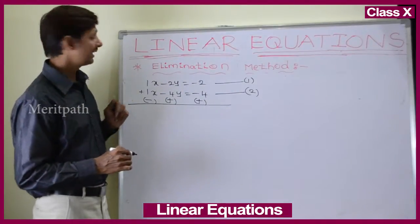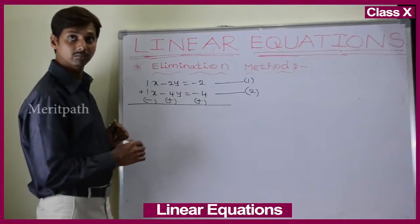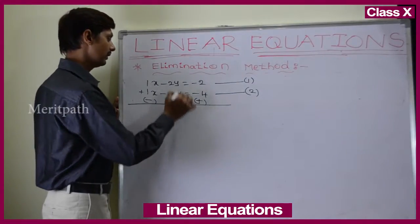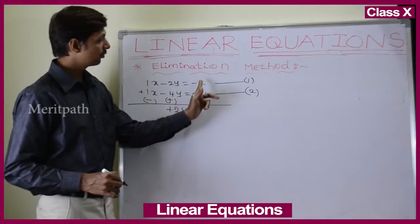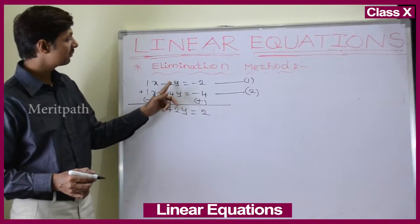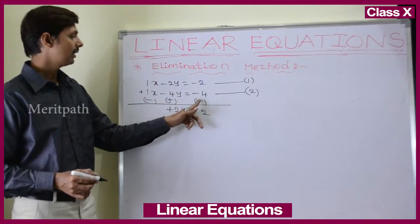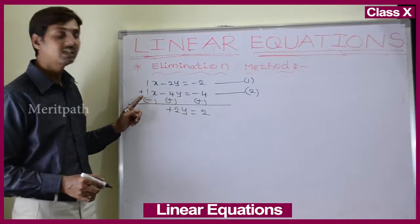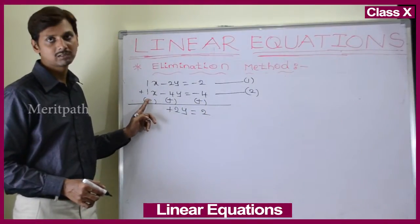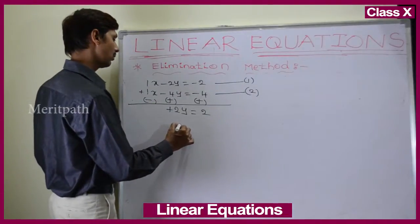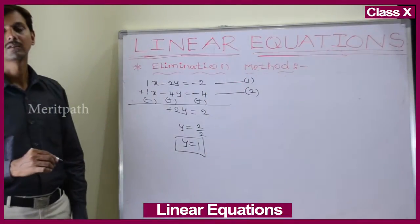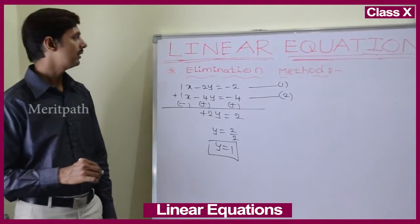Subtracting: x minus x gives 0. Minus 2y plus 4y gives plus 2y. Minus 2 plus 4 gives plus 2. So 2y equals 2, therefore y equals 1.